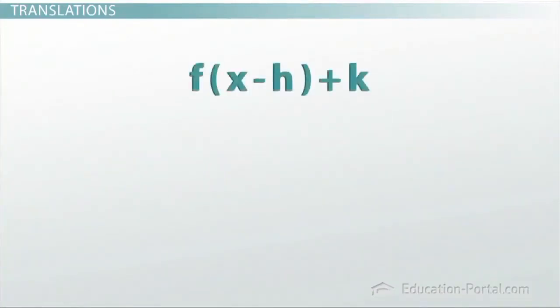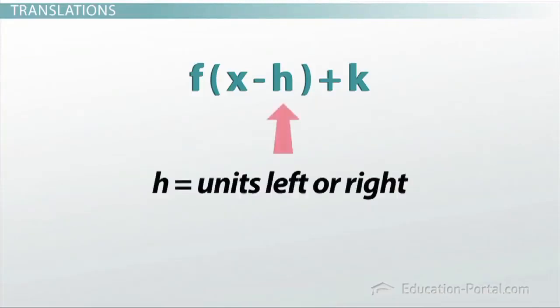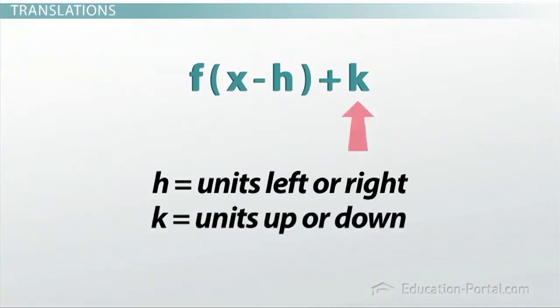What this means is that if we have a function f of x minus h plus k, h tells us how many units to slide the function left or right, and k tells us how many units to slide it up or down.